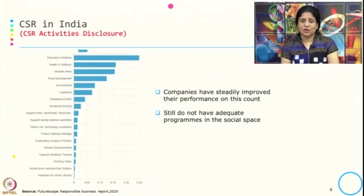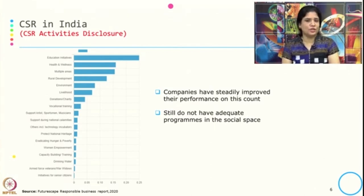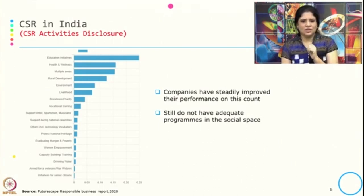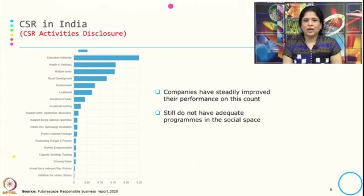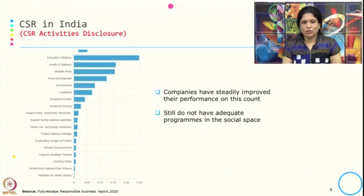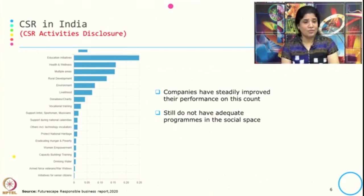This graph shows recent activity disclosure from the Futurescape Responsible Business Report 2020. On the y-axis you will find the activities that come under CSR or that companies have been doing under CSR — these include educational initiatives, health and wellness, rural development, environment, livelihood, donation and charity, and vocational training. There are many more areas where the presence of CSR by companies is still very marginal or minimal, or may even be absent, where they need to pick it up.